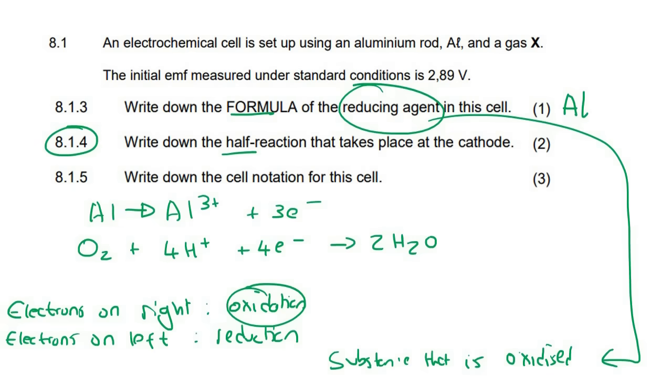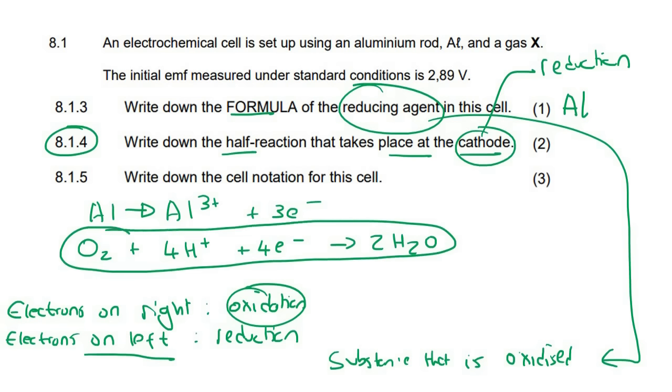This question says write down the half reaction that takes place at the cathode. Okay, so we know that cathode is reduction. That's where reduction happens. And reduction is when the electrons on the left. And so this is the answer for this question.